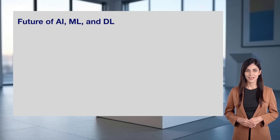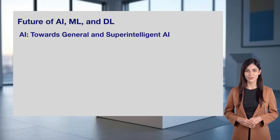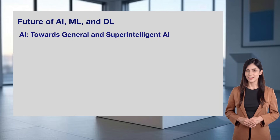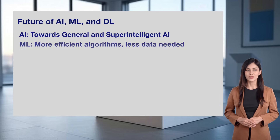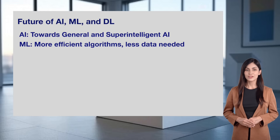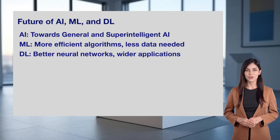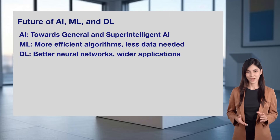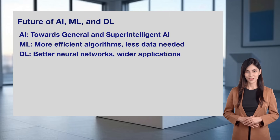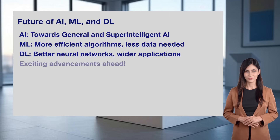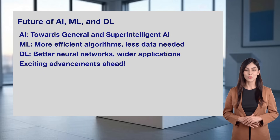What's next for AI, machine learning, and deep learning? AI is moving towards general and superintelligent AI, as we discussed in Day 2. Machine learning is focusing on more efficient algorithms that need less data to learn. Deep learning is improving neural networks, opening up even wider applications, like better autonomous systems. The future is exciting, with advancements that will make AI even more powerful and helpful in our lives.